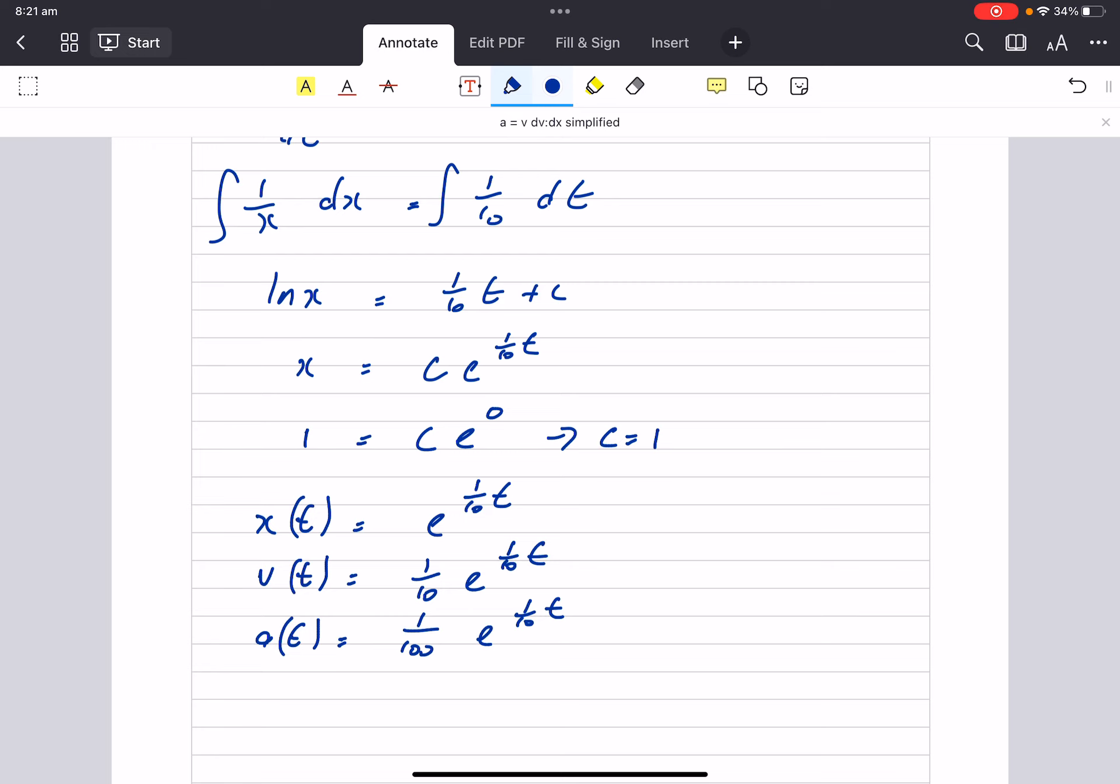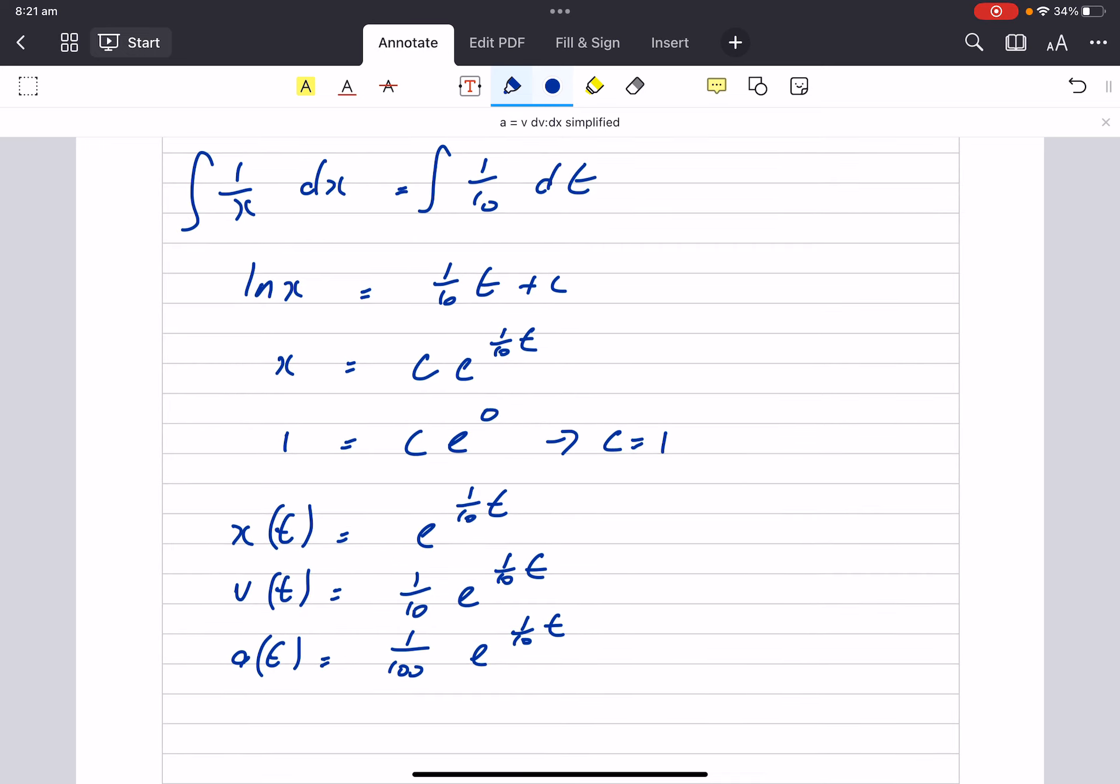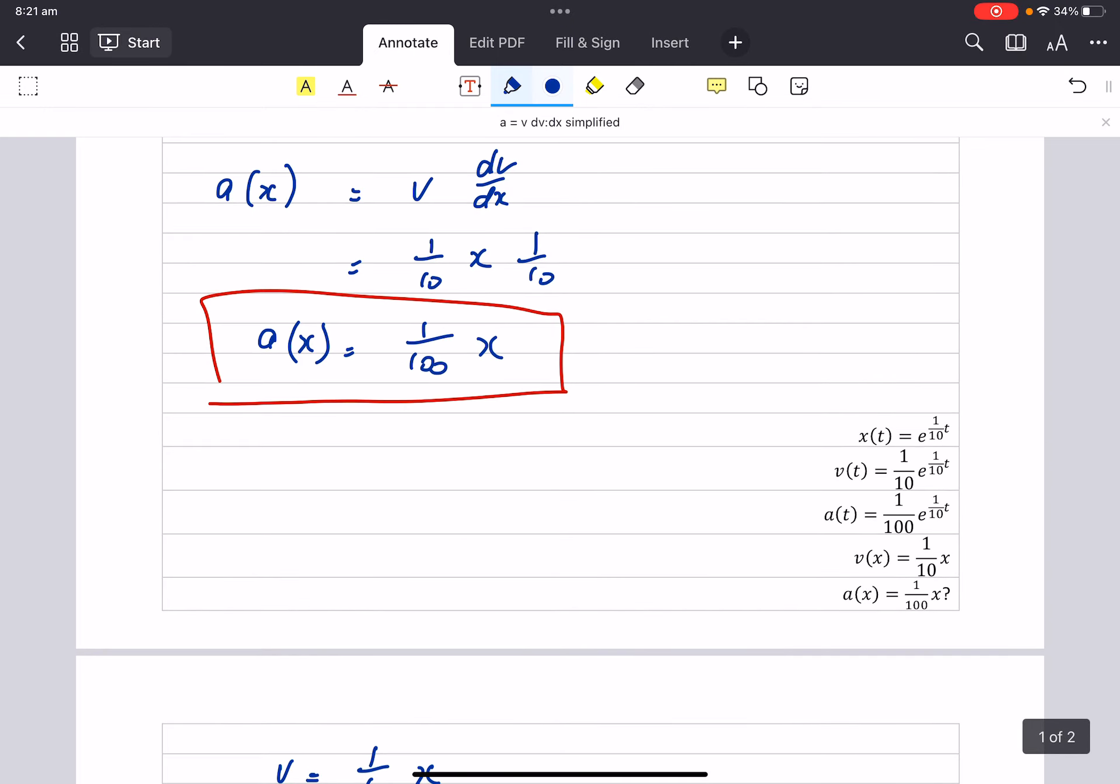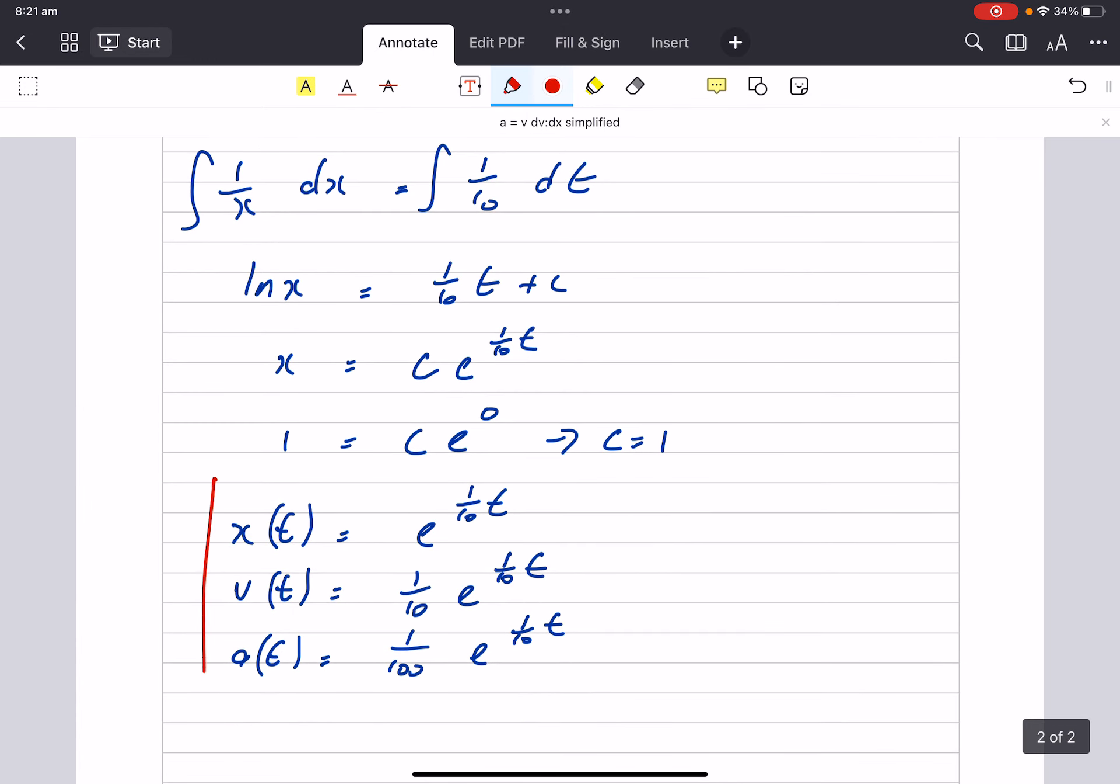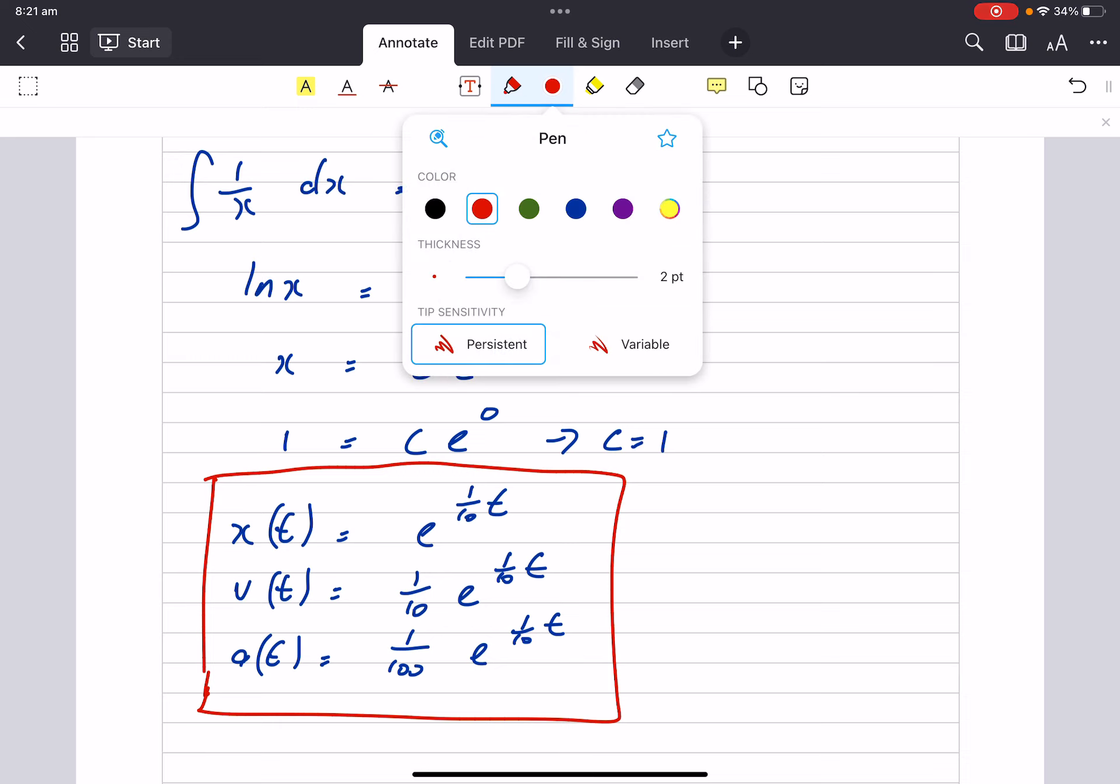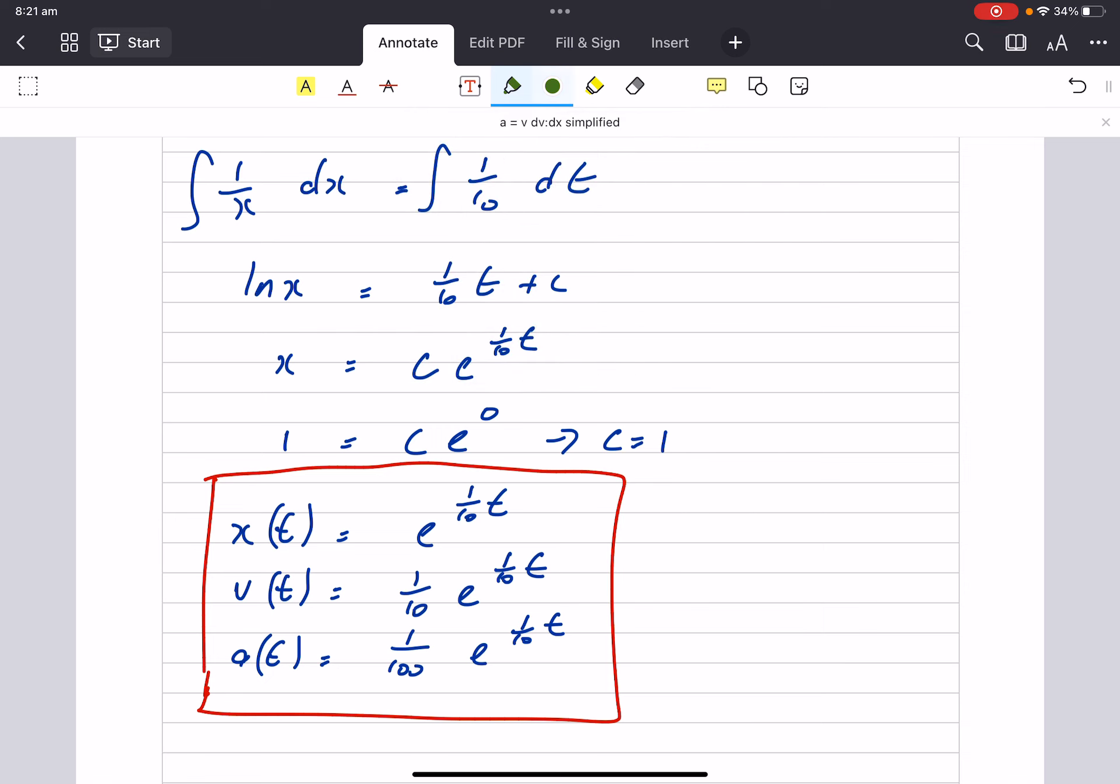Now I want you to spend some time in there and just sort of link answers between the five functions just to prove to yourself that they all get the same answers for the same time. So for example, when t equals 0, v equals one on 10. When t is 0, x equals 1. And when t equals 0, a equals one on 100.